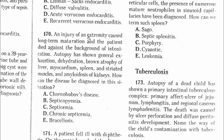Question 170: An injury of an extremity caused long-term suppuration and the patient died of intoxication. Autopsy showed general exhaustion, dehydration, brown atrophy of the liver, myocardium, spleen, striated muscles, and amyloidosis. This is a type of chronic septicemia, where we have extensive purulent processes causing intoxication, amyloidosis, atrophy, dehydration, and decrease in spleen. The answer is chronic septicemia.